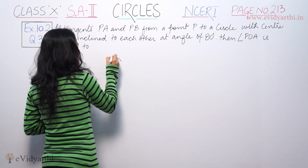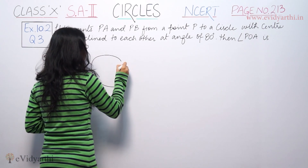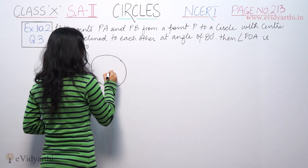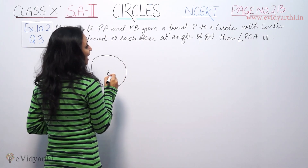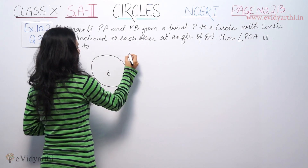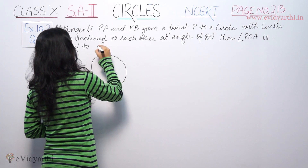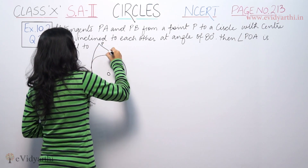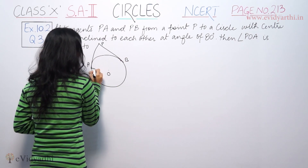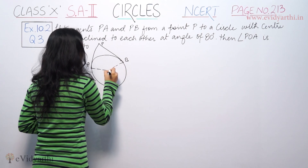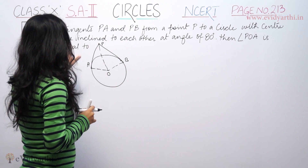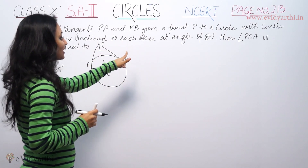So this is our basic circle, where O is the center. The tangents are PA and PB from point P to the circle. Let's suppose point P is here. These are tangents PA and PB — let's say this is PA and this is PB. We join them to the center.